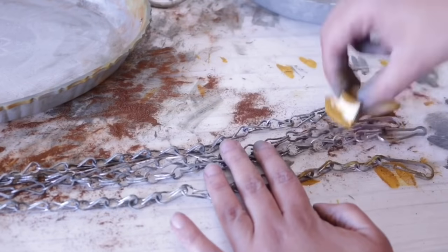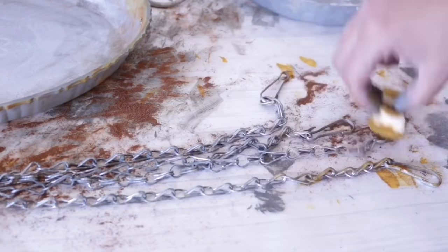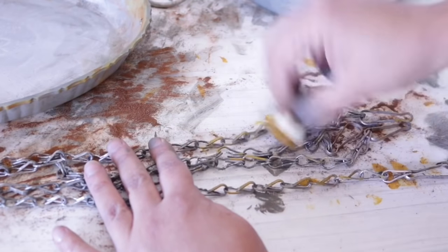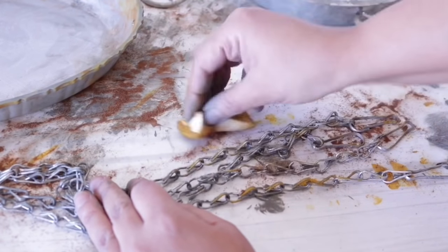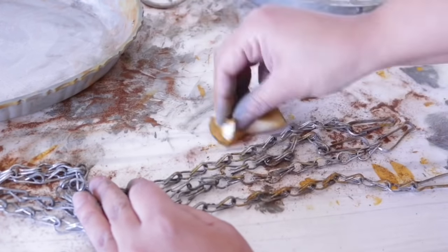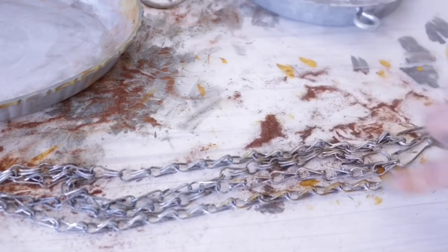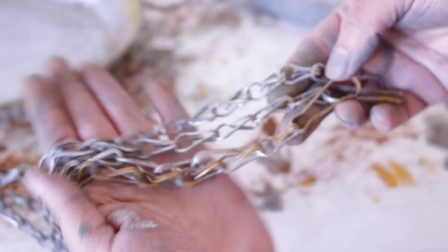You can always add more if you feel like you don't have enough. For my chains, I wasn't delicate at all. I literally just sponged color on and then took all of my leftover cinnamon that had fallen and pressed it directly into the chains, making sure that I paid extra attention to the bottom pieces and to the top.